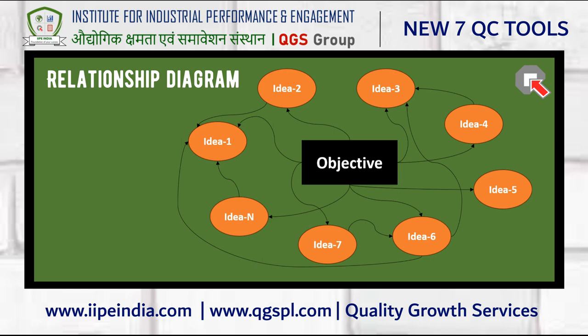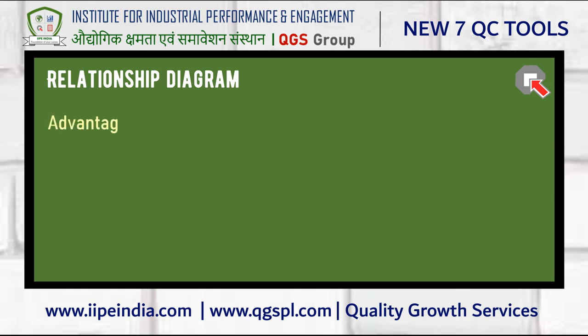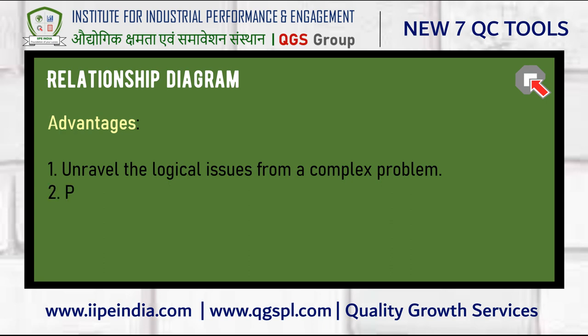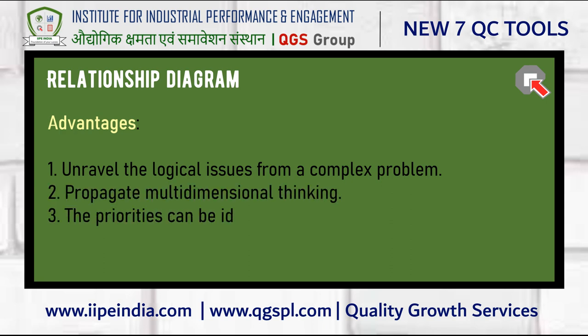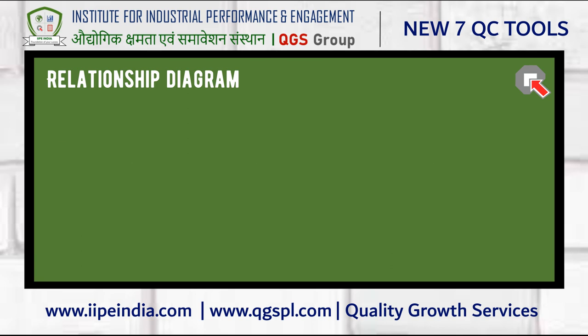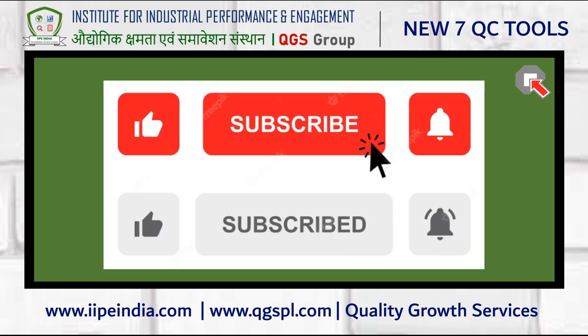You can pause this video and have a look at this example — this is the relationship diagram and this is how it is drawn. It may help you in unraveling logical issues from a complex problem and would propagate multi-dimensional thinking. The priorities can be identified easily and accurately. In the next video, we shall discuss another new management tool.